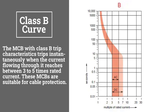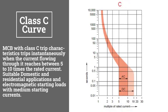Class B has a tripping curve of 3 to 5 times the rated current and it's suitable for cable protection. Class C has a tripping curve current of 5 to 10 times the rated current and it's suitable for domestic and residential applications.